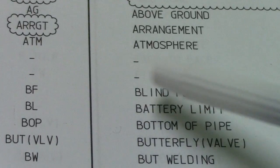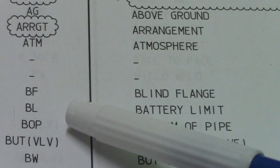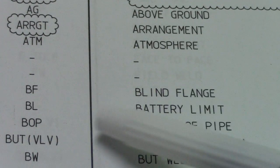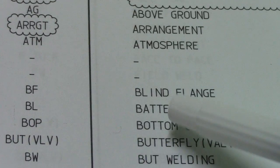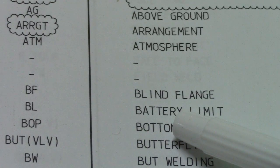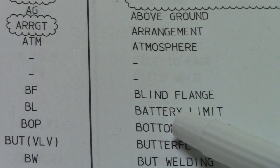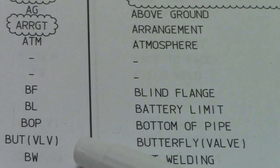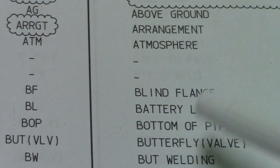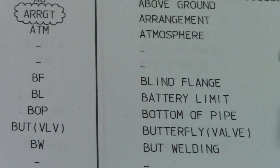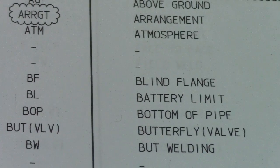BF is blind flange, BL is battery limit, BOP is bottom of pipe, BFV is butterfly valve, and BW is butt welding.